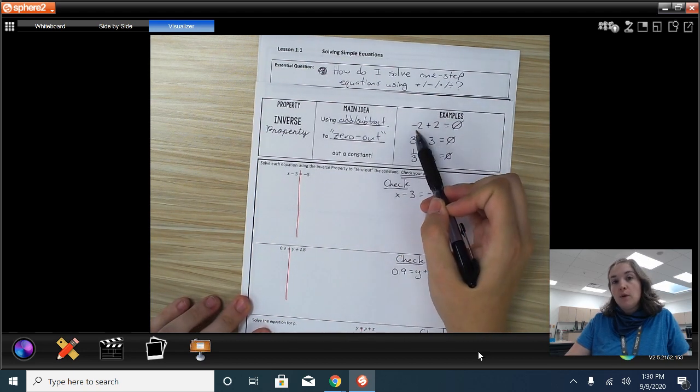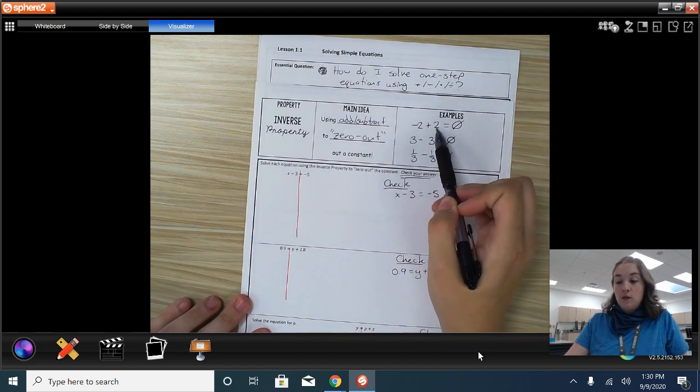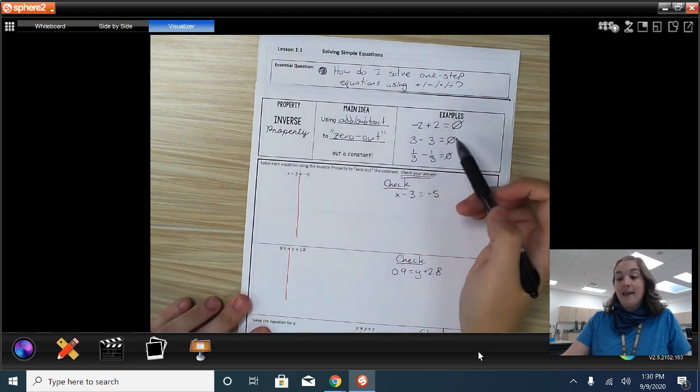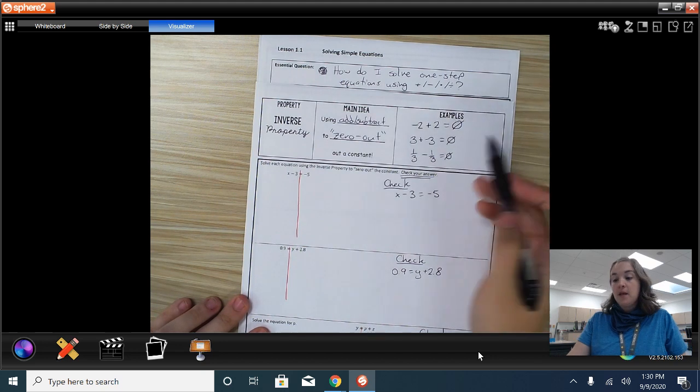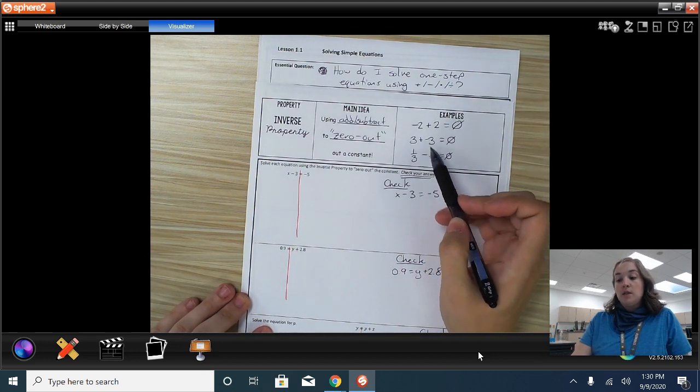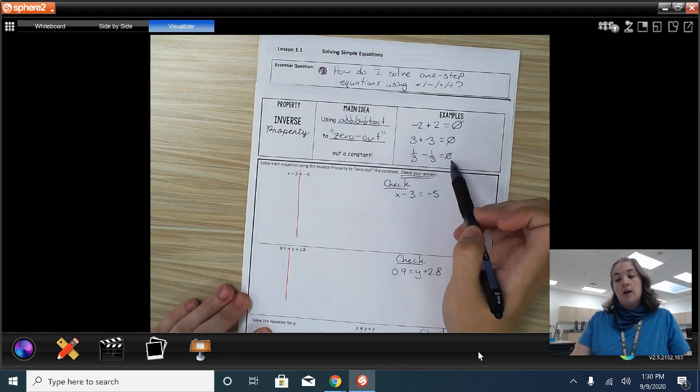So if you have negative 2, you can use adding 2 to get 0. Or a positive 3, you can subtract 3 or add a negative 3 to get 0. Or even if you have fractions, like one-third, to zero that out, you would subtract one-third and you get a 0.